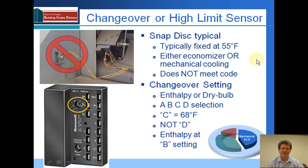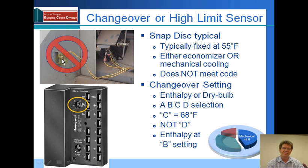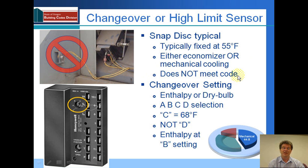One thing that indicates that you do not have integrated economizer control is what's called a snap disk. This is usually located under the hood or where the outside air comes into the unit. It's a small, round, silver disk. This typical snap disk operates at a fixed temperature of 55 degrees, and with this type of control, the unit is set up so that either it's the economizer or mechanical cooling, but not both. This does not meet code and it's not compliant. It actually hasn't been compliant for quite some time, although these units continue to be installed because they are a lower-cost item.